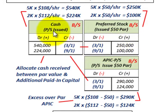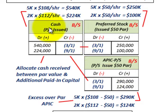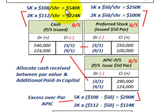We also have our cash account for the actual cash receipts received on this preferred stock. To review: we have to allocate the cash received between the par value of the stock and the additional paid-in capital. Starting with our cash account, on March 1st we issued five thousand shares at a hundred and eight dollars per share.